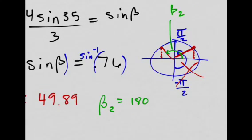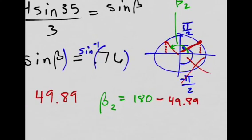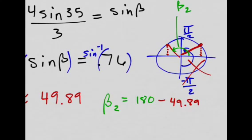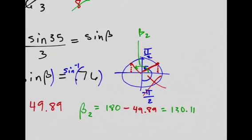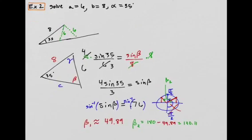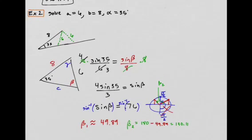So I'll say minus 49.89. So beta 2 gives me 130.11. So I have two angles for beta. This is going to be a long example. I have two angles for beta, two choices. That means I'll have two choices for gamma, and then I'll also have two choices for our c value. And I'll get all of them. We're definitely going to practice this more. So let's see what happens.